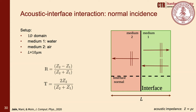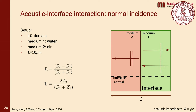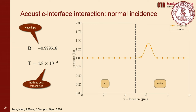Next is an acoustic interface interaction test case. An acoustic wave incident on a flat water-air interface produces a reflected and transmitted wave, with amplitudes determined by reflection and transmission coefficients based on acoustic impedances Z1 and Z2. For water and air at 10 micrometer length scale, the reflection coefficient is approximately negative one and the transmission coefficient is 10^{-3}, which is quite small. Therefore, every time a wave is incident on the interface, it flips and essentially nothing is transmitted across.